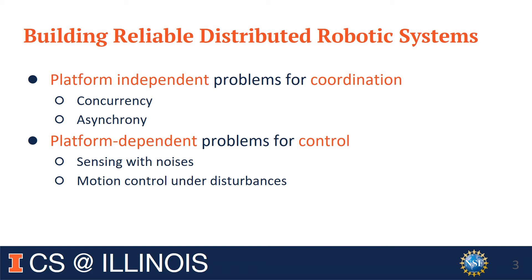However, designing and building a reliable multi-robot system remains challenging. This is because it involves reasoning with two very different types of concerns. First, the correctness concern in coordinating multiple robots has to deal with inherent concurrency and asynchrony — topics intensively studied in the distributed computing community. At the same time, we also have to ensure that robots correctly interact with the physical world under noise and disturbance, which the control theory community has studied for decades.